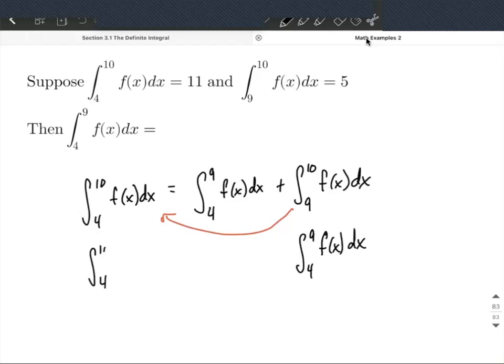So we have the integral from 4 to 10 of f of x dx minus the integral from 9 to 10 of f of x dx. So it's just a little bit of rearranging. That's all there is to it.